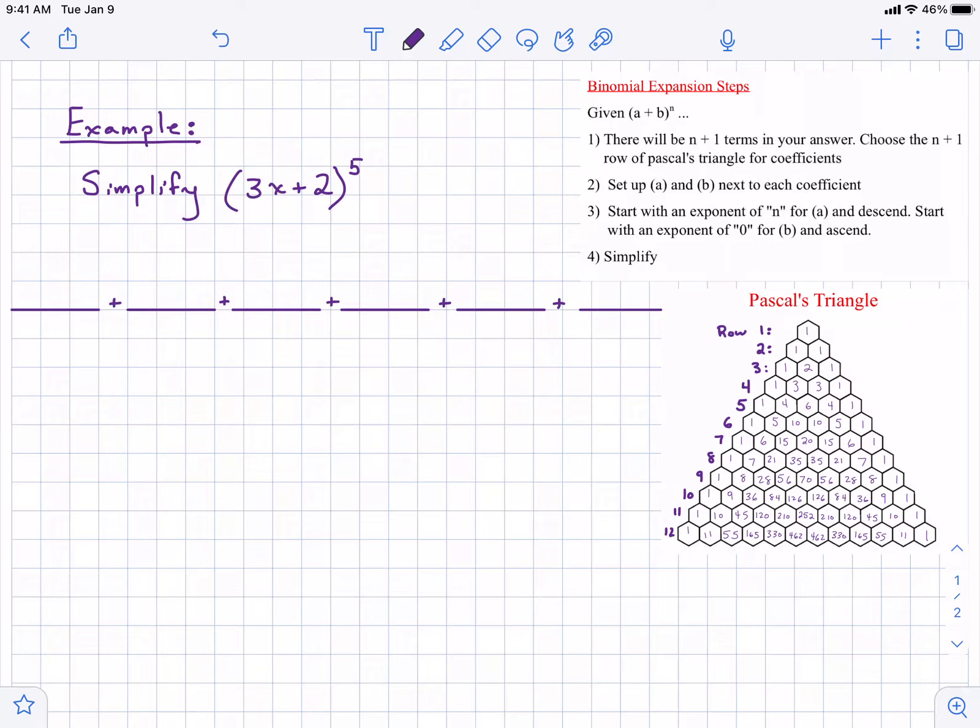I have an example here: we're going to be simplifying (3x + 2) to the fifth power. Early in Algebra 1, multiplying polynomials, foiling, box method - expressions like this are very common.